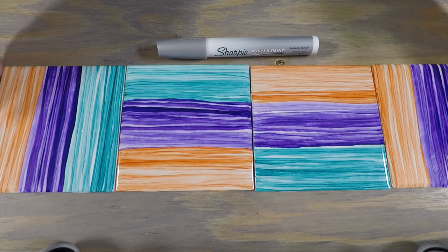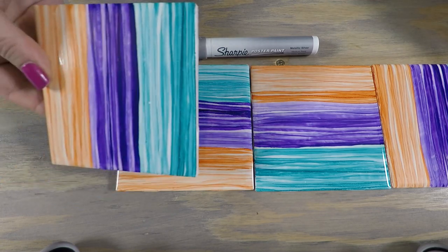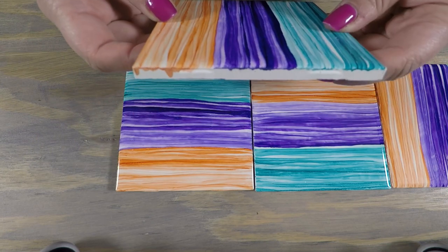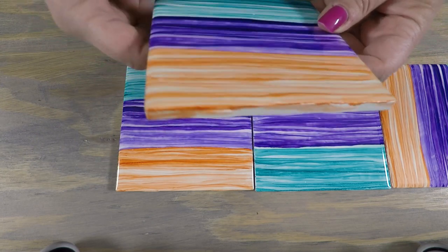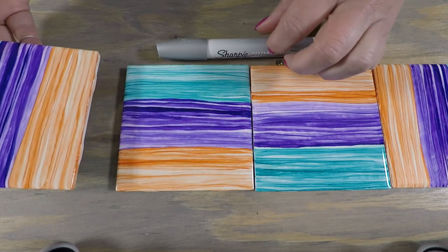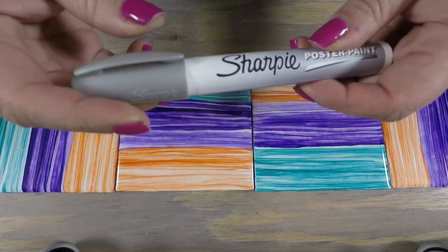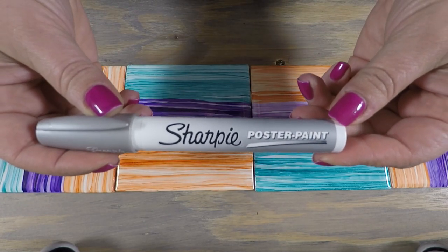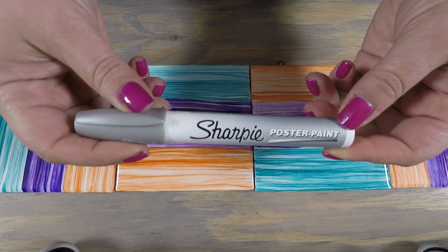Hey everyone, Elisa with Jatz Designs. In this video, it's a follow-up to my last one where I did these alcohol ink ripple coaster sets. I'm going to show you how I clean up the sides or basically paint the sides with the Sharpie poster paint marker, and then I'm going to seal them and coat them in resin.